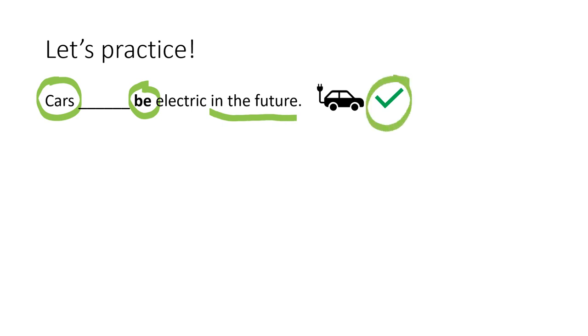So let's practice. Our first sentence, here we have the thing that we are talking about with the s, cars, and here we have our verb and in the future. And here we have a tick so we know that it's going to be an affirmative sentence. So what's the word that's missing? Cars will be electric in the future. Will, very good.